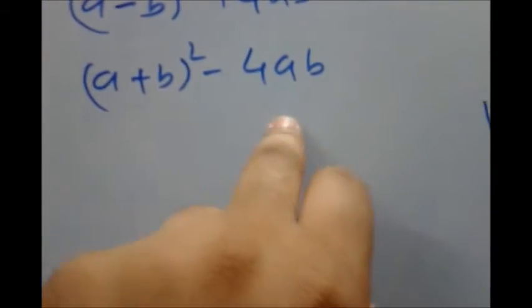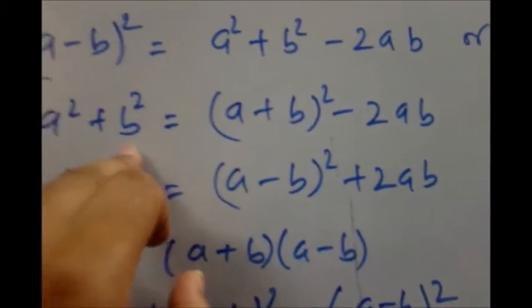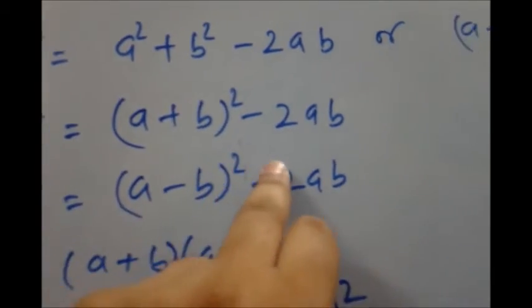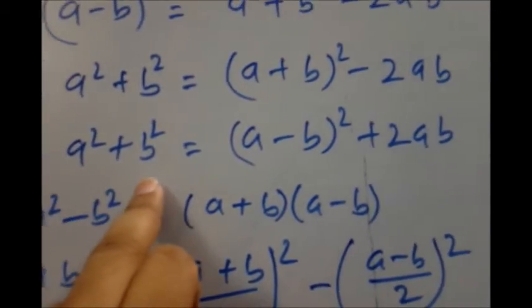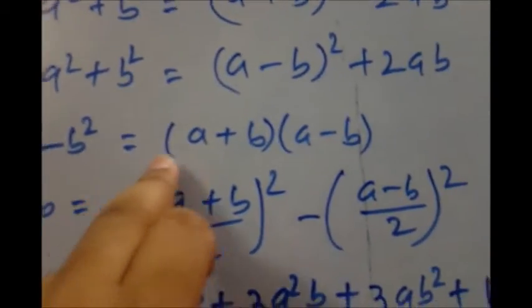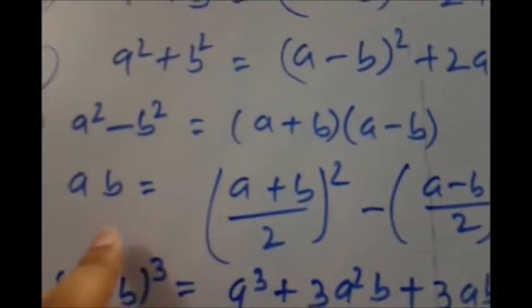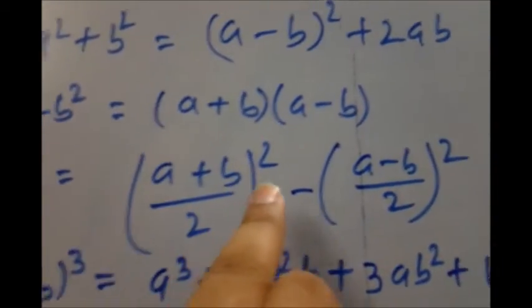Third formula: a² + b² = (a + b)² - 2ab. Fourth: a² + b² = (a - b)² + 2ab. Fifth: a² - b² = (a + b)(a - b). And the next one: ab = [(a + b)/2]² - [(a - b)/2]².